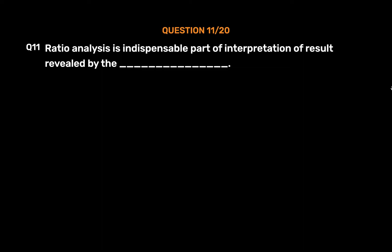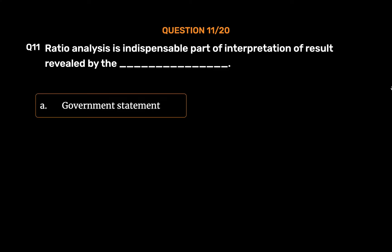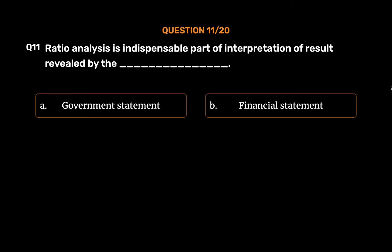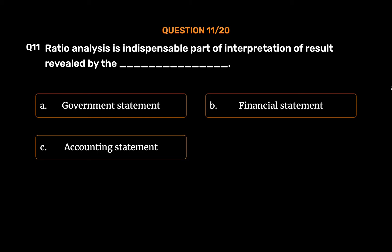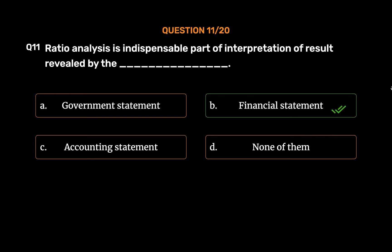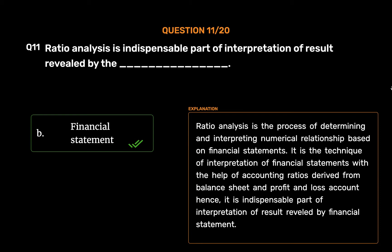Question number 11. Ratio analysis is an indispensable part of interpretation of results revealed by the: Option A: Government statement. Option B: Financial statement. Option C: Accounting statement. Option D: None of them. The correct answer is Option B: Financial statement. Ratio analysis is the process of determining and interpreting numerical relationships based on financial statements. It is the technique of interpretation of financial statements using accounting ratios derived from the balance sheet and profit and loss account.